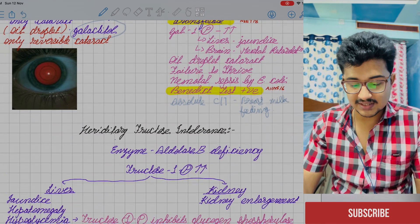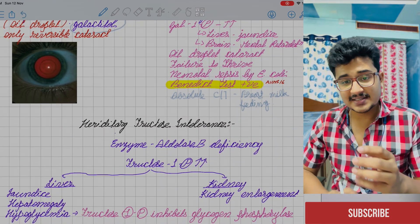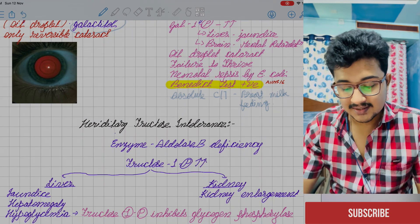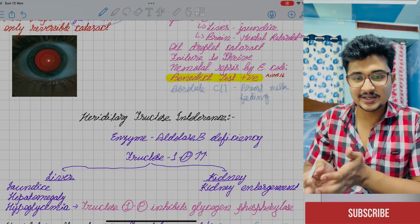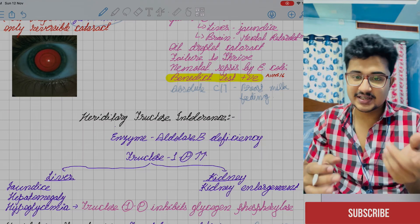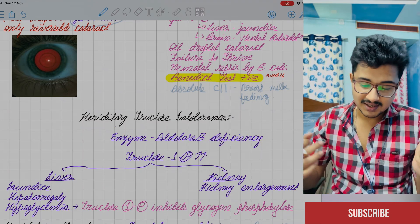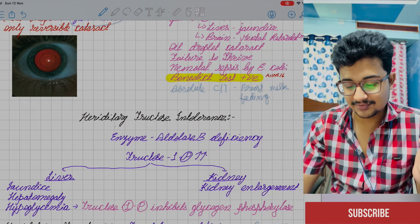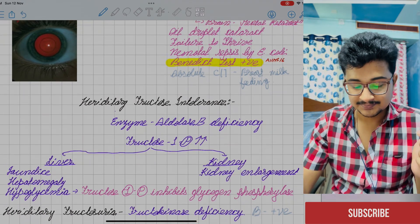Hereditary fructose intolerance: the deficient enzyme is aldolase B. Fructose-1-phosphate accumulates in the liver causing jaundice, and hypoglycemia because fructose-1-phosphate inhibits glycogen phosphorylase. In the kidney, it causes kidney enlargement.